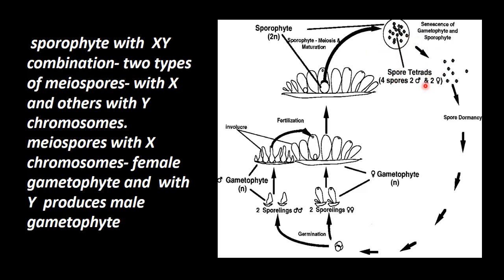In total, meiosis produces spores four in number together, so it is called tetrads — it forms many numbers of tetrads. In these tetrads, two will be having Y chromosome and two will be having X chromosome. So two males and two females are produced.